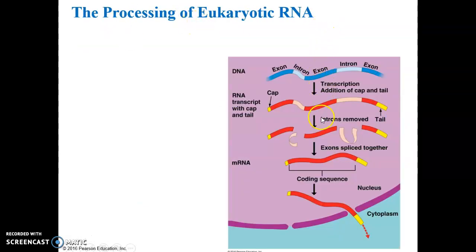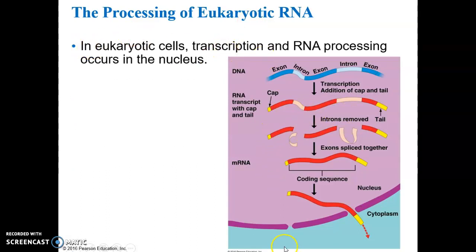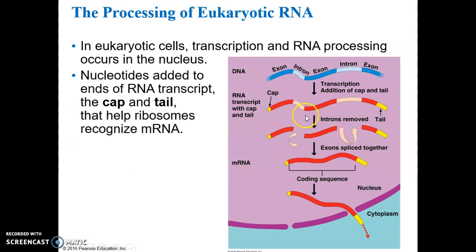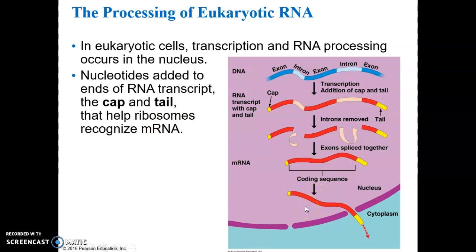There is processing of RNA molecules in eukaryotic cells. Transcription and RNA processing occur within the nucleus of eukaryotic cells. The processing essentially involves cutting out parts that are not needed and adding a few nucleotides at one end and at the other end of the RNA molecule - referred to as the cap and the tail. What leaves the nucleus is the processed RNA molecule with its cap and tail, which are color-coded here in yellow. The function of the cap and tail is to help the ribosomes recognize the mRNA molecule.